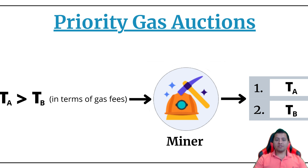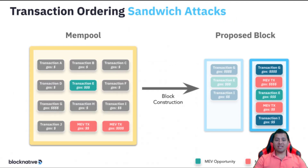And number two is via reordering, including, or censoring transactions to profit from on-chain liquidation or arbitrage opportunities for themselves.